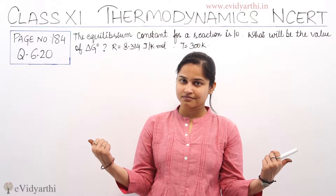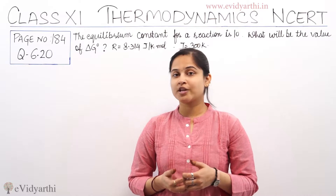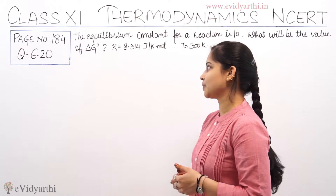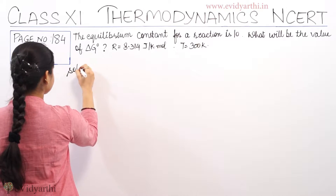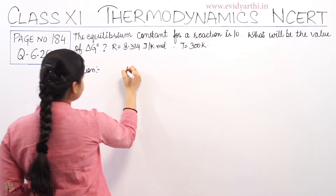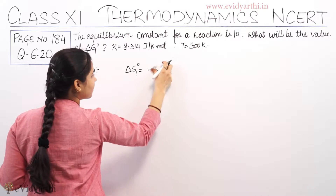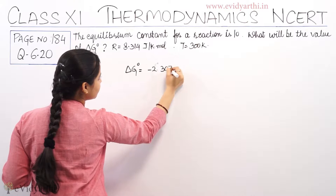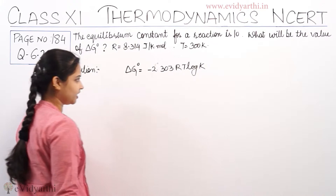From these given conditions, we have the equilibrium constant, the temperature, and the gas constant. Delta G naught is equal to minus 2.303 RT log K. This is the equation for delta G naught.